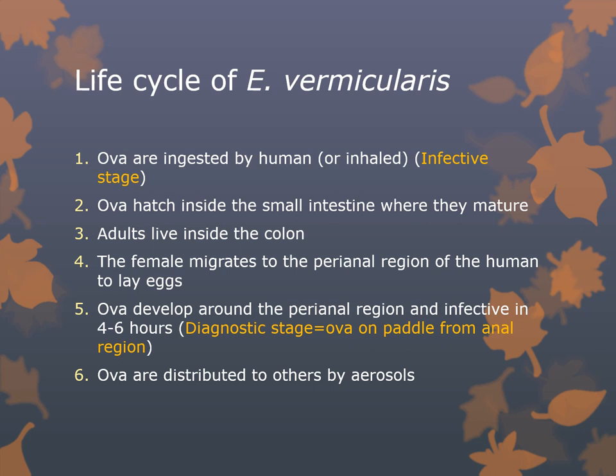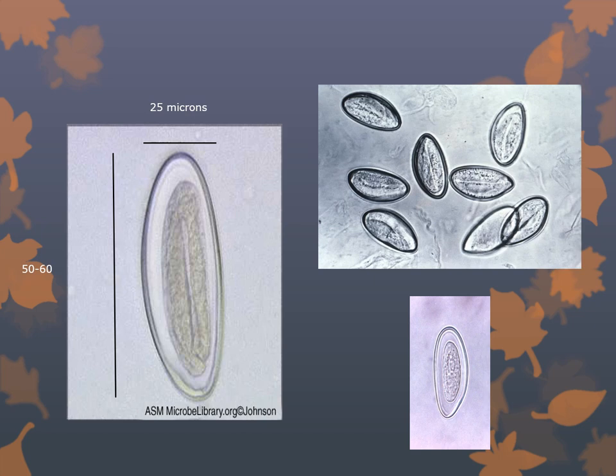In the life cycle of Enterobius vermicularis, ova are ingested by the human or inhaled — that's the infective stage. The ova hatch inside the small intestine where they mature, and adults live inside the colon. The female migrates to the perianal region and lays her eggs there, up to 10,000 ova a day. The ova develop around the perianal region and are infective in about four to six hours. The diagnostic stage is finding ova on the pinworm paddle from the anal region. Pinworm ova are about 50 to 60 microns in length and 25 microns in diameter, usually with one flat side and a thick shell inside which you may see developing larvae.